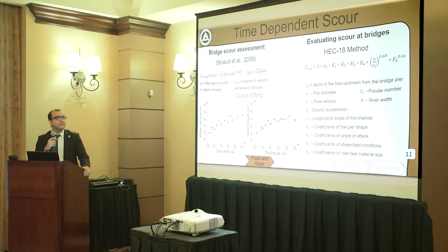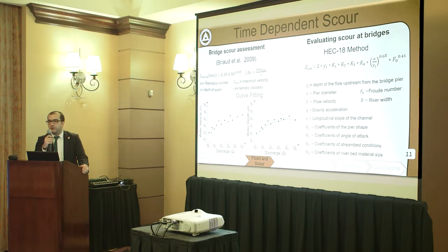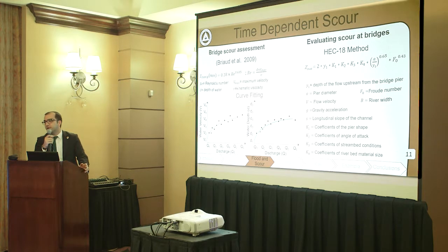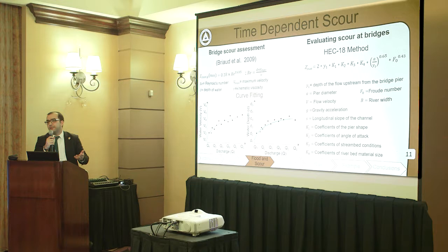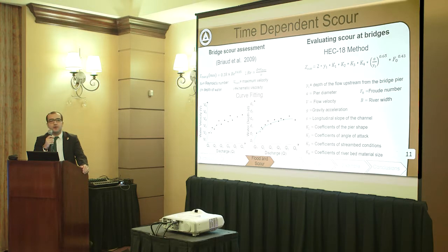After finding the flood peaks, we perform time-dependent scour analysis. We have different methods available — one is the bridge discovery assessment method presented in 2009, and another is the HEC-18 equation, which is widely used. In this study, we use the bridge discovery assessment method. The main inputs for scour models are water velocity and water depth. Rather than using empirical equations alone — which may not be accurate for all channel and riverbed types — we use curve fitting on observed data from the last 60 years for water velocity, water depth, and discharge to establish the relationship between them.